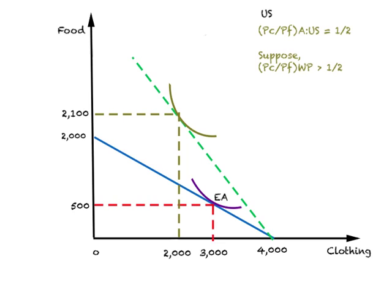The U.S. is initially in autarky and now decides to engage in foreign trade. What it finds is that the world relative price of clothing is given by this green line. As you can see, this green line — which represents the relative price of clothing in the world market — is steeper than what we had in autarky. In other words, Pc over Pf in the world market must be greater than one half, the autarky relative price of clothing in the U.S. So with foreign trade, the relative price of clothing goes up, and the U.S. will export clothing and import food.